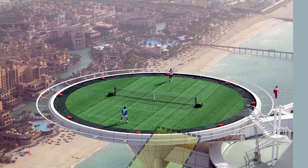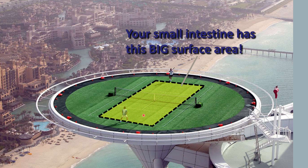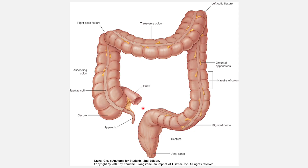If you take the whole small intestine and extend it, it is as large as a tennis court — quite amazing. The large intestine includes the ascending colon going up superiorly, the transverse colon going straight across, the descending colon going down, the sigmoid colon, the rectum, and then the anus. Thank you for listening — we will move on with the other systems in other videos, and I hope this video helps.